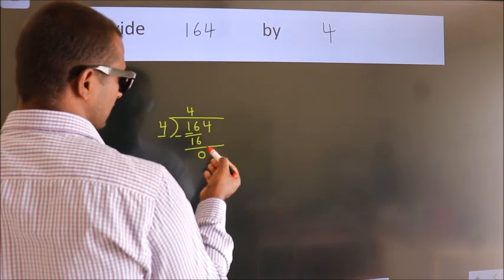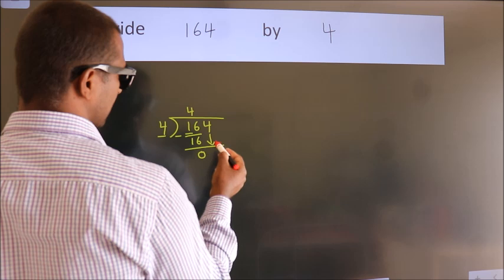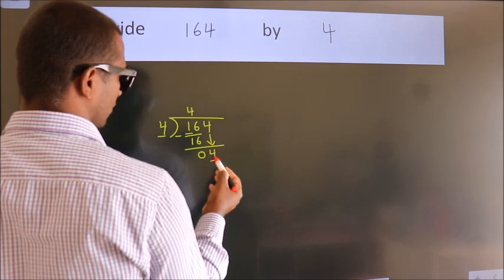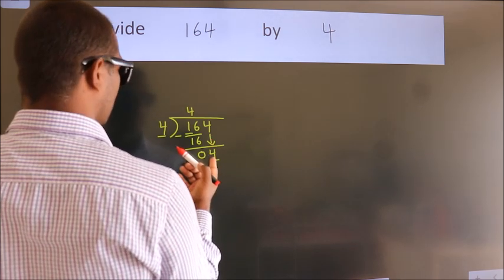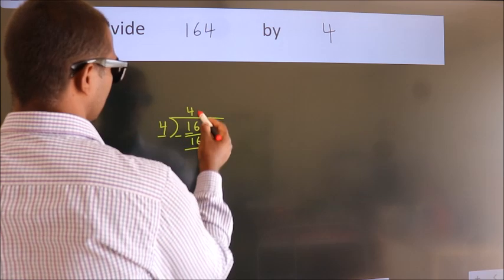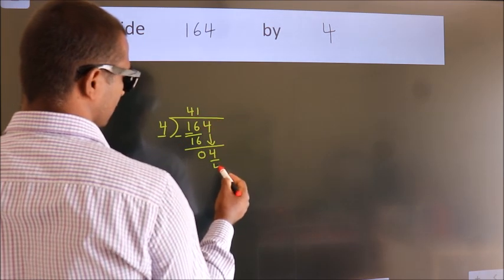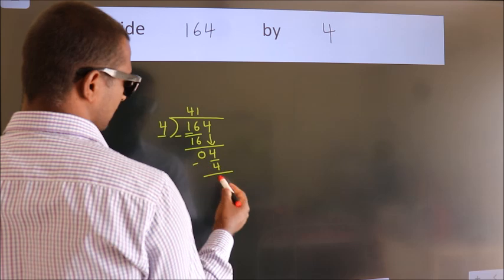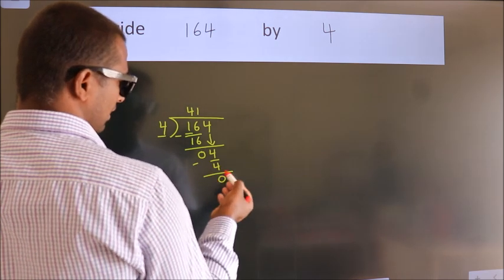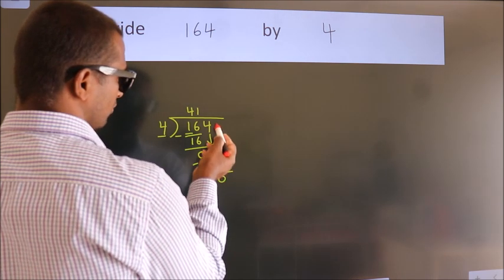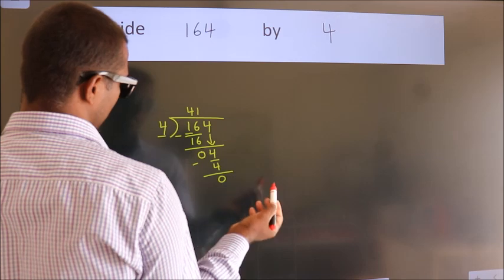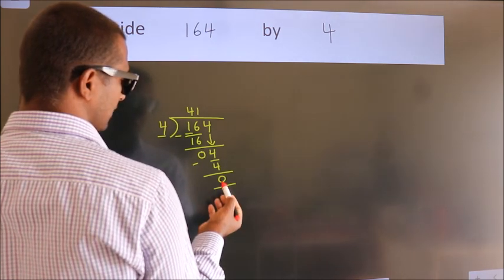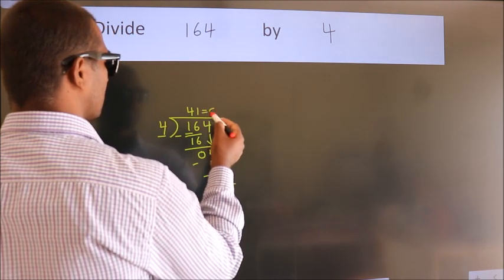After this, bring down the beside number, so bring down 4. When do we get 4 in the 4 times table? 4 ones are 4. Now we subtract and we get 0. After this, there are no more numbers to bring down, and we got remainder 0, so this is our quotient.